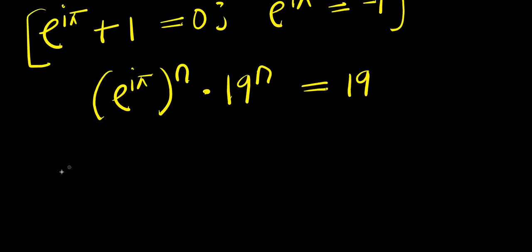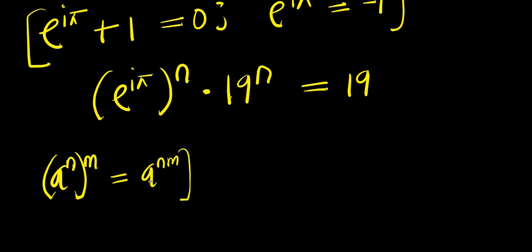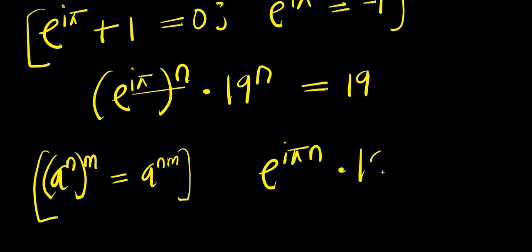Now, applying the power of a power rule — if you have a^n raised to the power of n, this equals a^(n times n) — multiplying this out, we have e to the power of i times pi times n, times 19 to the power of n, equals 19.